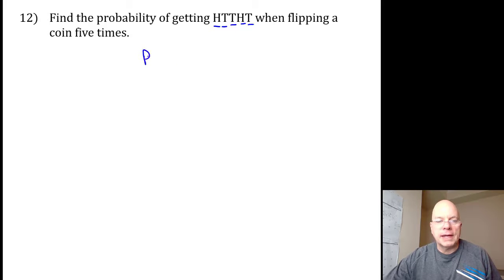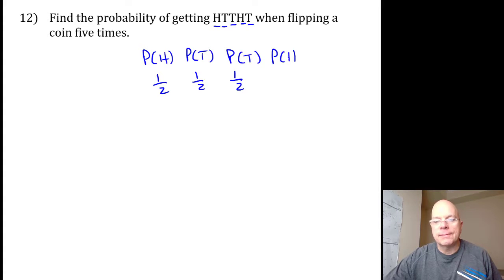The probability of getting heads is half, the probability of getting tails is half, the probability of getting tails on the third flip is half—all of these probabilities are half. The product of these would be one over two to the fifth power, or one thirty-second.